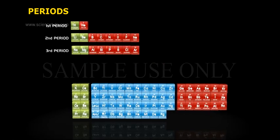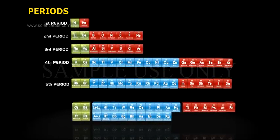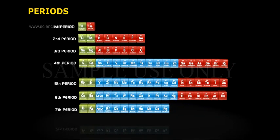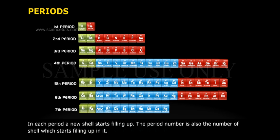There are seven rows in the periodic table. Each row is called a period. The periods have been numbered from one to seven using Arabic numerals. In each period, a new shell starts filling up. The period number is also the number of the shell which starts filling up in it.